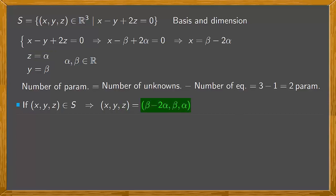Now, the trick is to separate this vector into a sum of vectors where only one parameter appears in each. In our case, a vector with only beta: (beta, beta, 0), plus one with only alpha: (-2 alpha, 0, alpha). Then we take out alpha and beta to give beta(1, 1, 0) plus alpha(-2, 0, 1).